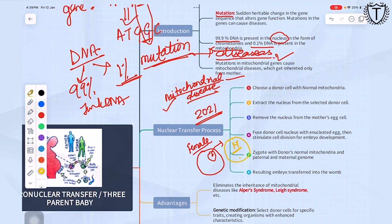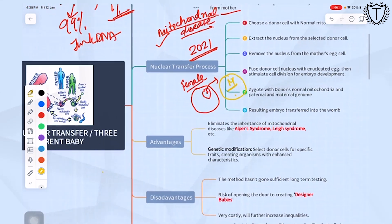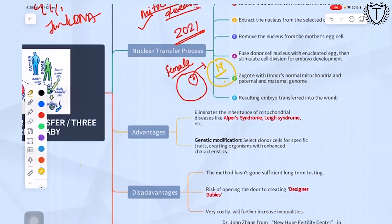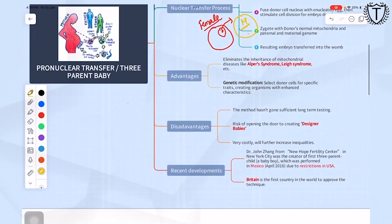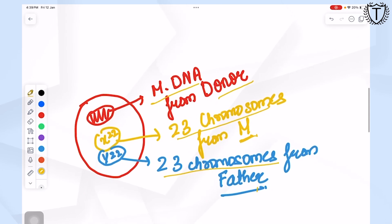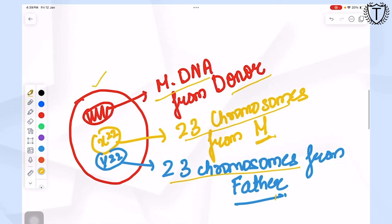Under controlled conditions, we fertilize this new egg cell with the father's sperm cell and that leads to the formation of a zygote which has the mitochondria from the donor, 23 chromosomes from the mother and 23 chromosomes from the father.